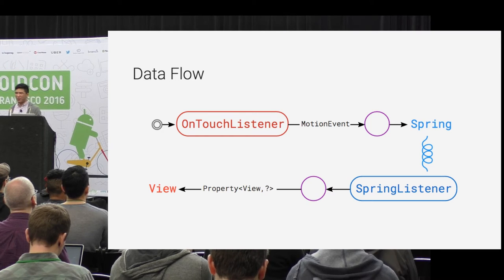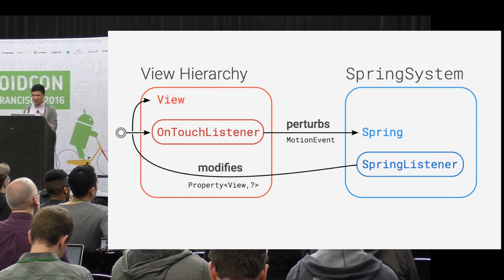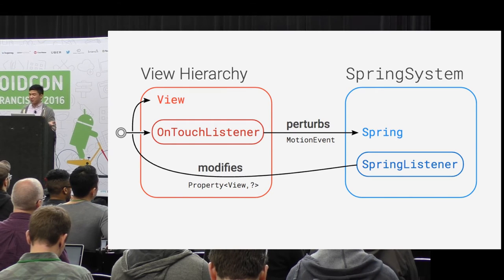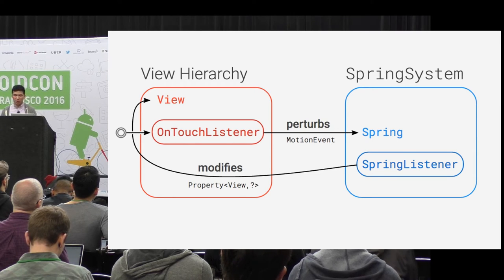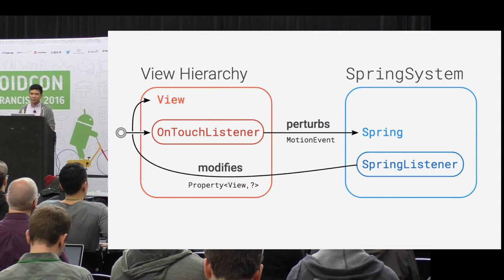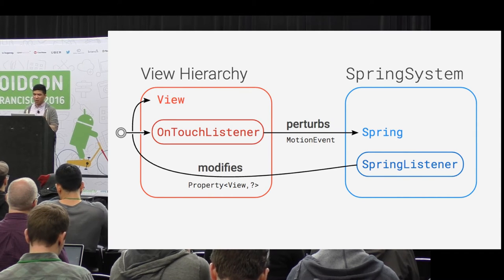The thing that's complicated about Rebound is that your view owns your onTouch listener. The onTouch listener sets the end value or modifies the spring. The spring owns the spring listener, which notifies it every time it animates, and then the spring listener modifies the view. You have to set up this entire architecture when using Rebound, and there can be issues with references and memory leaks if you forget to unassign the spring listener.